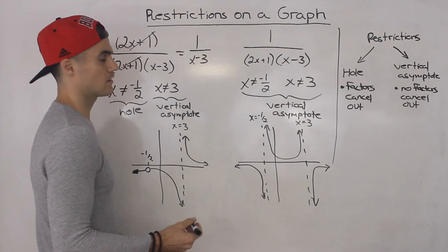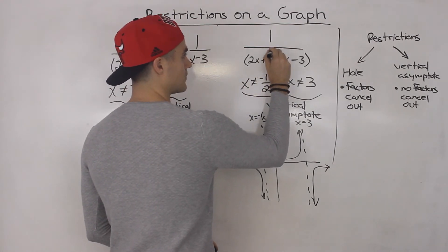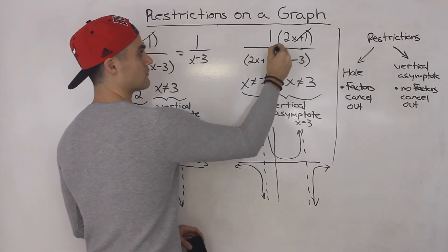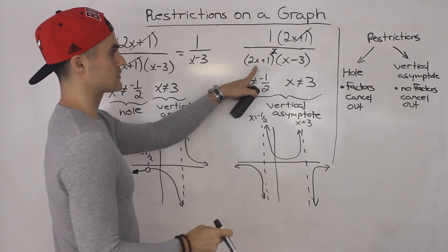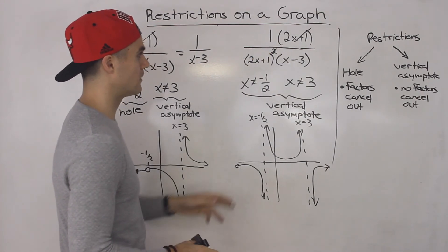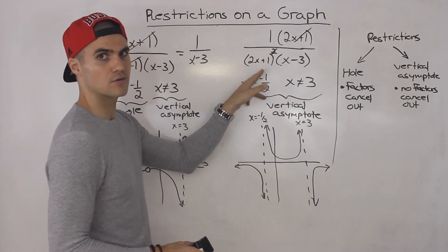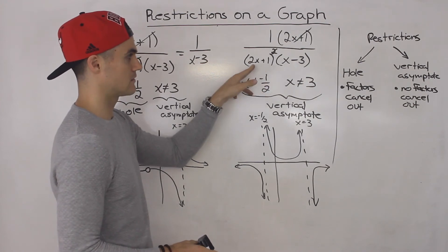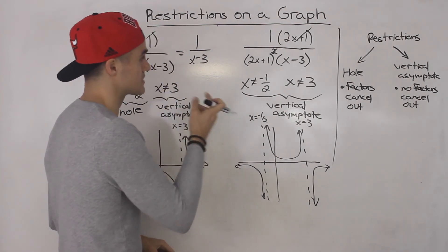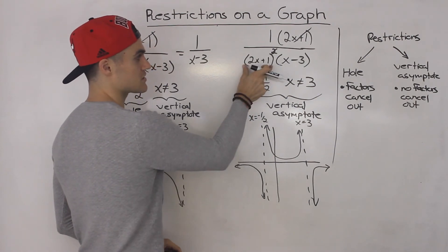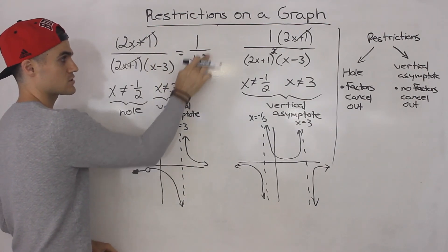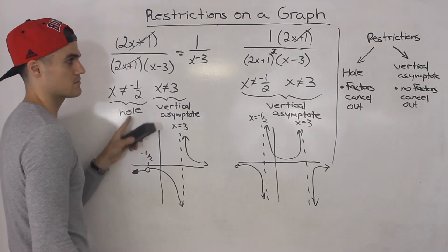Another question that sometimes comes up: what if you have 2x plus 1 squared in the denominator and a 2x plus 1 at the top? Notice that one of these will cancel out, but we're still left with a 2x plus 1 at the bottom. In this case, it's still a vertical asymptote. If there's still a factor remaining there at 2x plus 1, then it's still a vertical asymptote at x equals negative one half, even if the same factor canceled out beforehand. If there's still something remaining, there's a vertical asymptote. But if you cancel it out and it's totally gone, then it's going to be a hole.